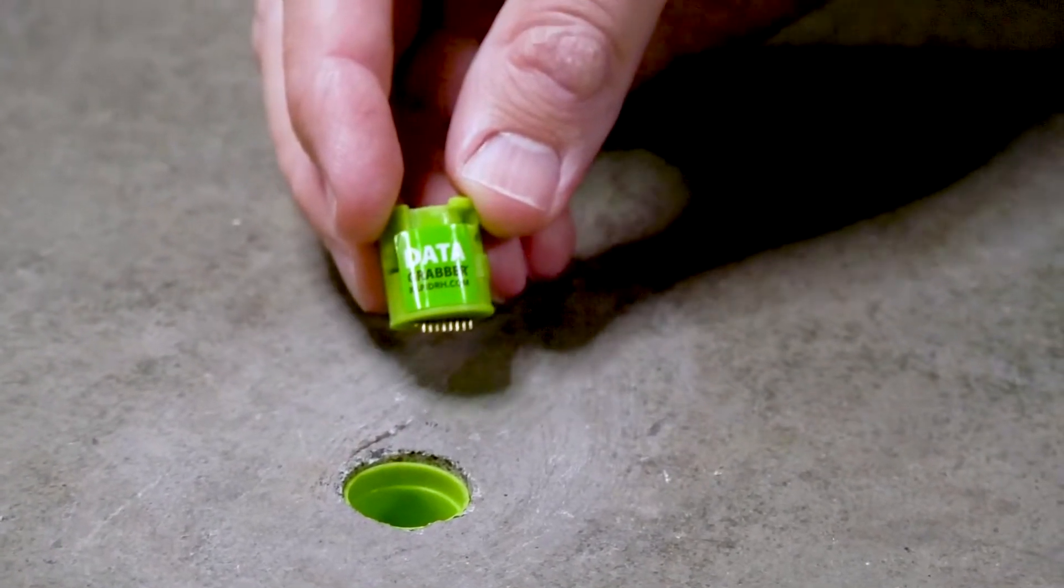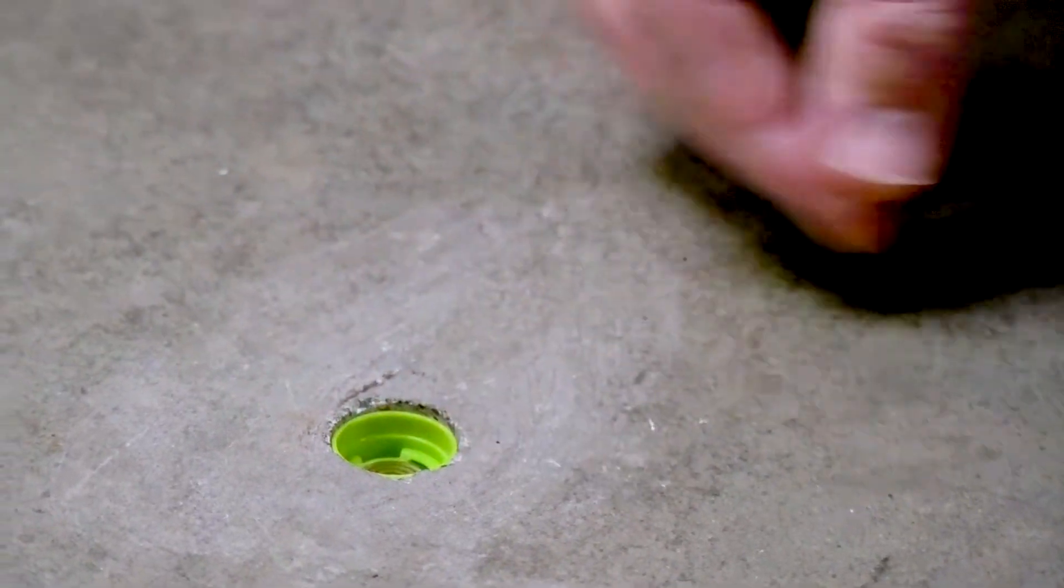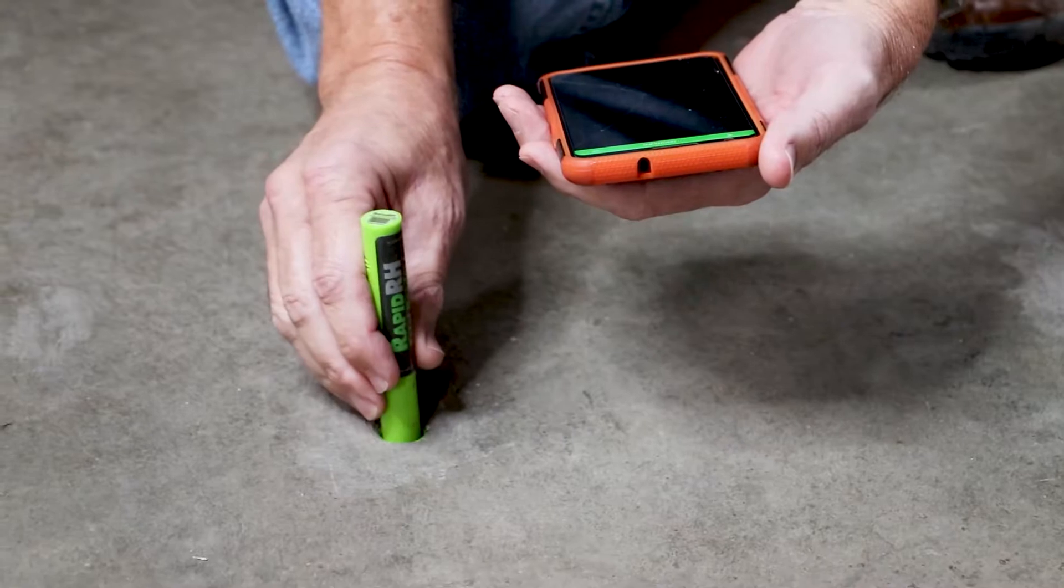The Data Grabber inserts inside the L6 sensor and is activated by touching the Total Reader while inside the L6 smart sensor.